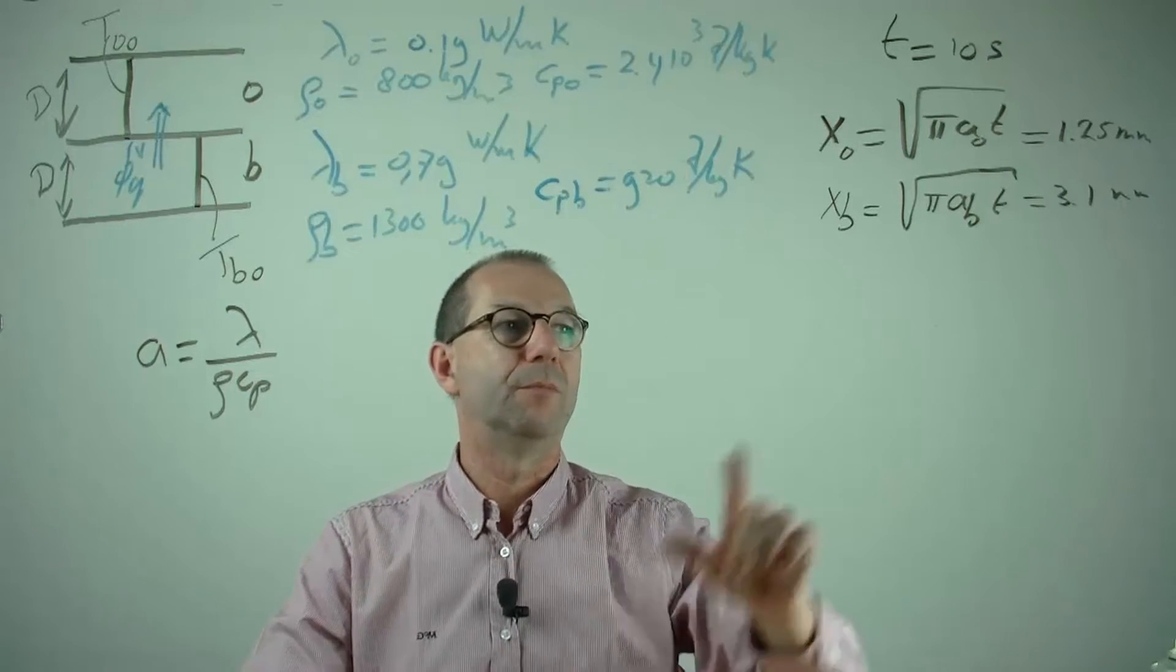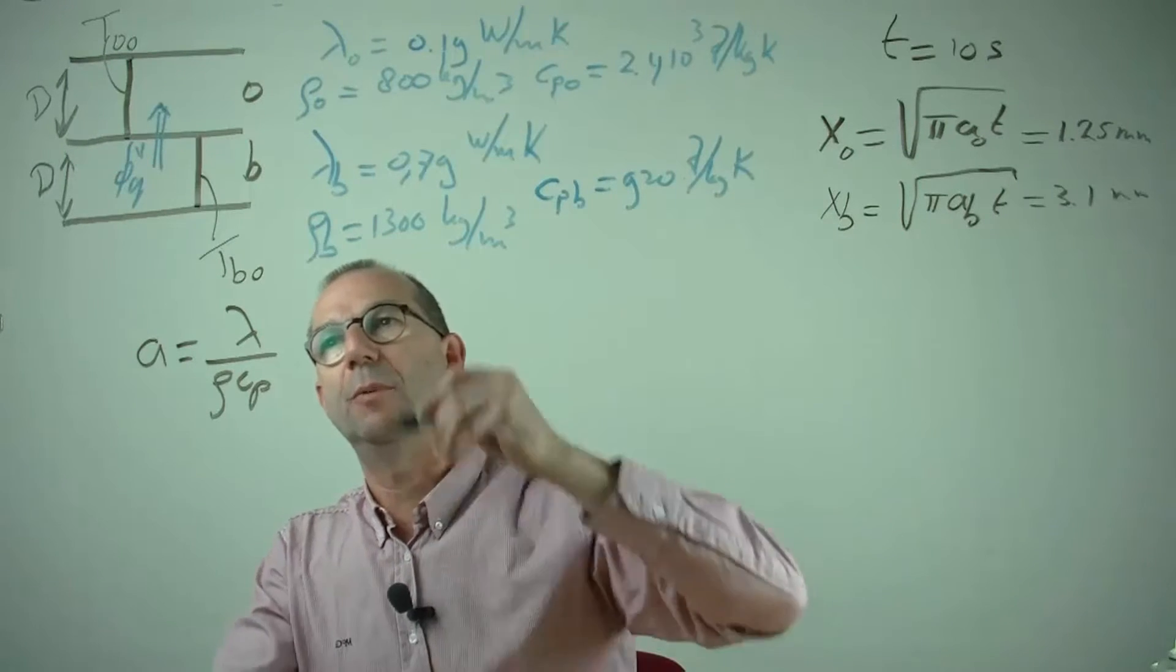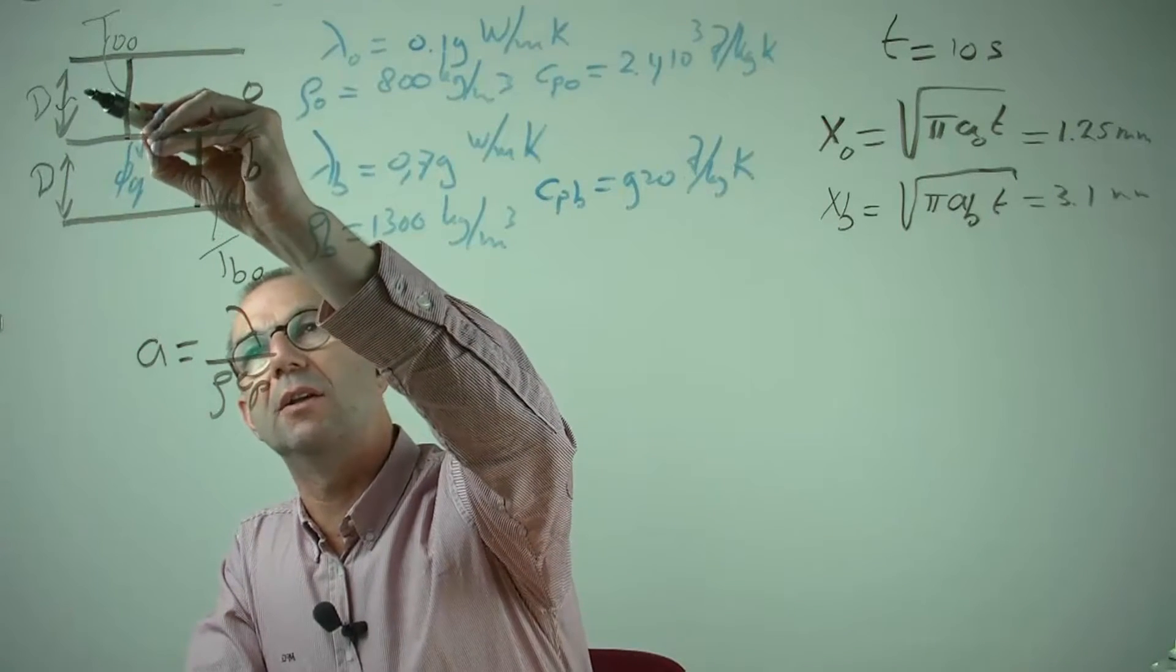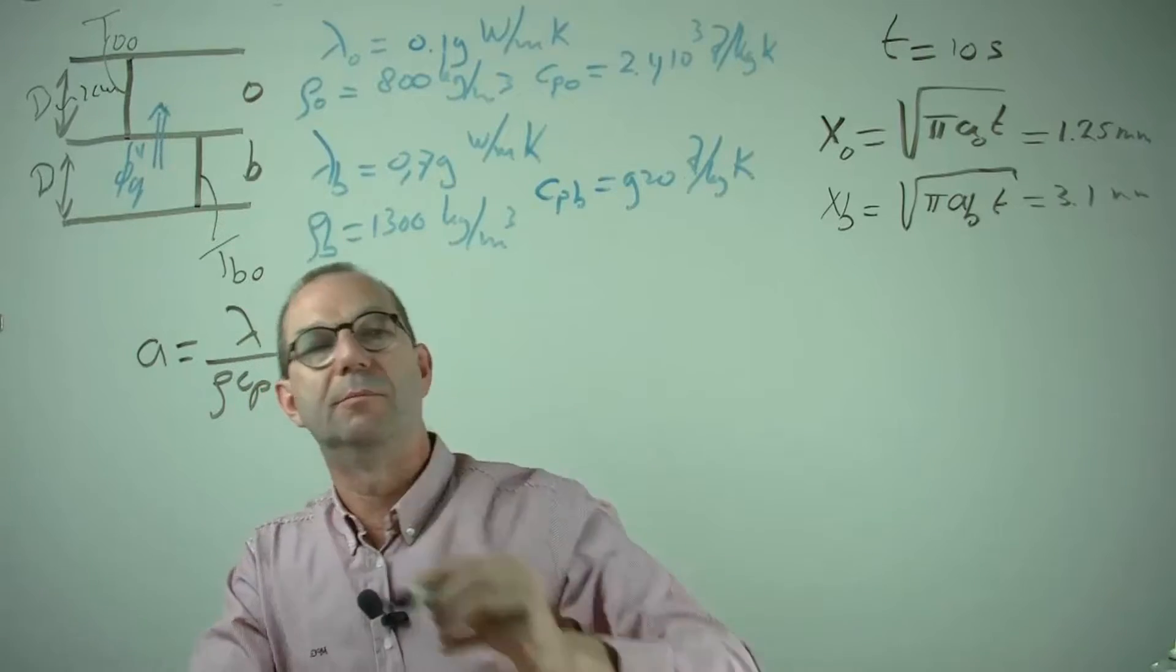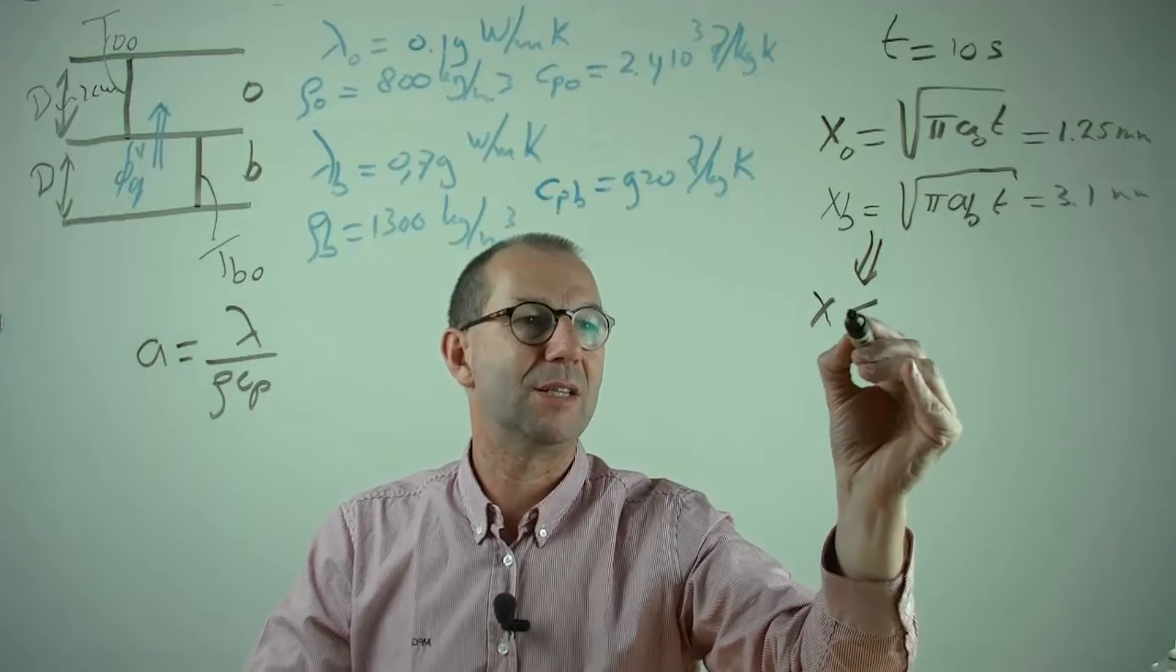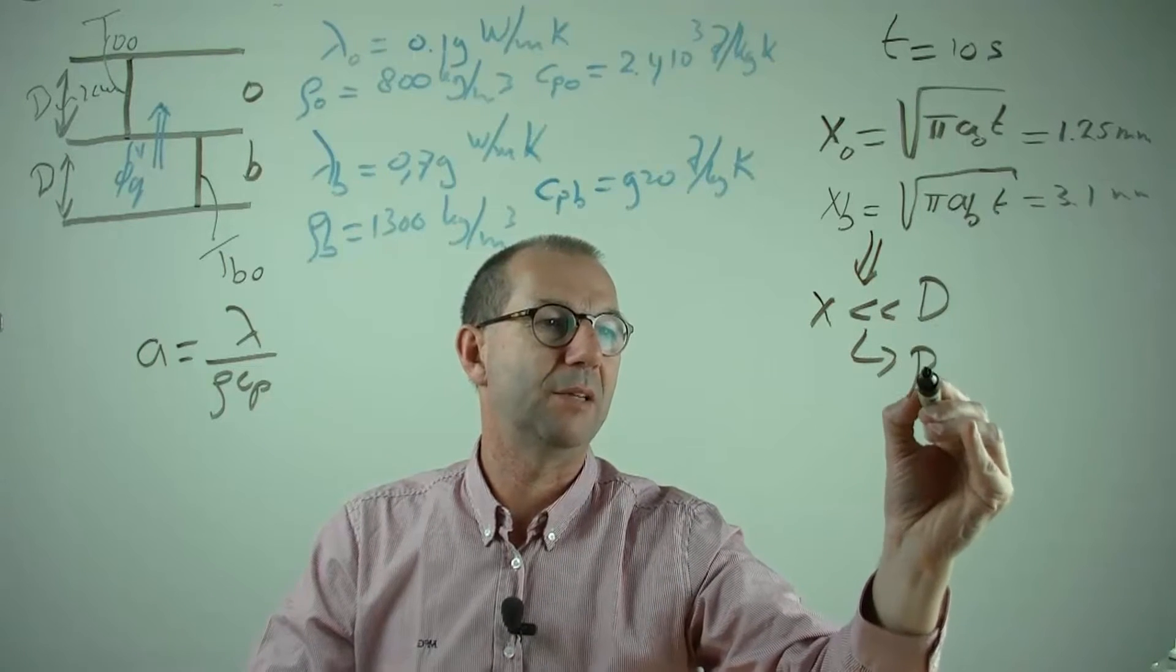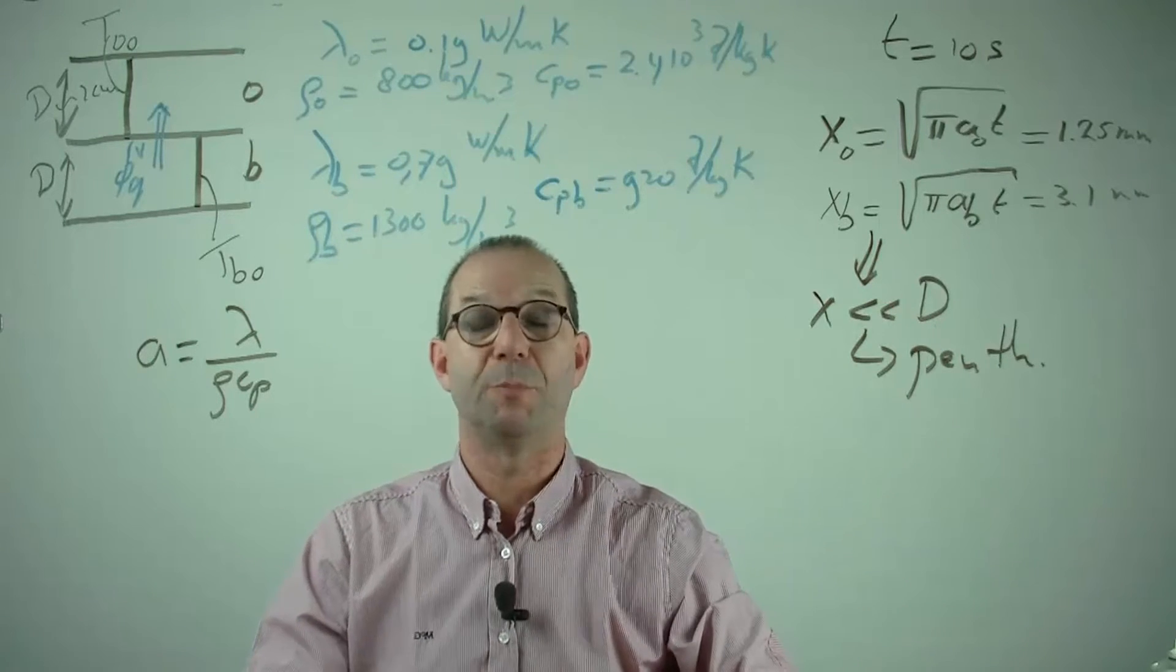First conclusion. Both of these are much smaller than the distance d that we had here, the thickness of 1 cm. Thus, as the x are much smaller than d, it's penetration theory that can be used. Short times approximation.